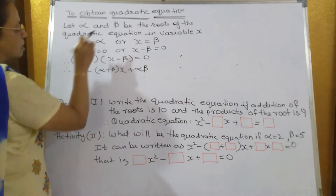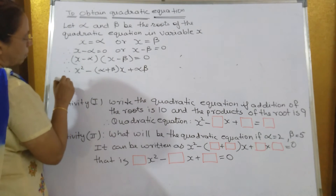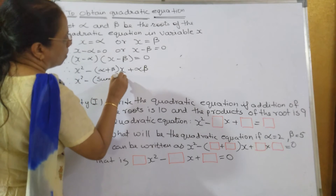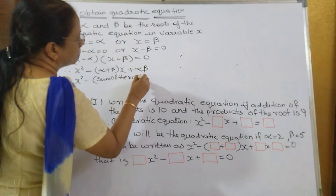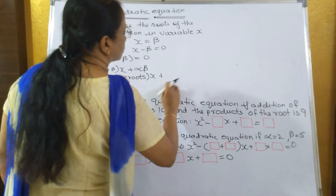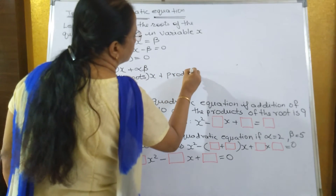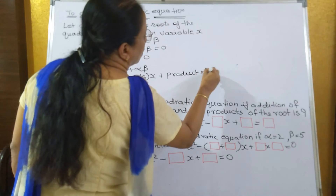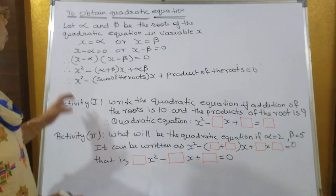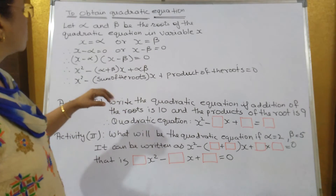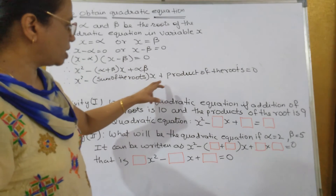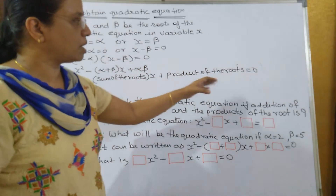So if alpha and beta are given, how do you form the equation? The equation will be x squared minus the sum of the roots into x, plus the product of the roots, equals 0. That is, x squared minus (alpha plus beta) into x, plus alpha into beta, equals 0.